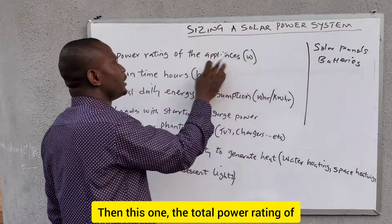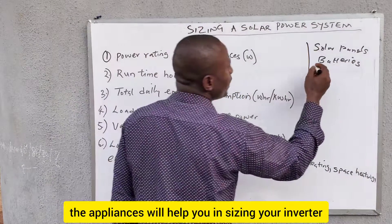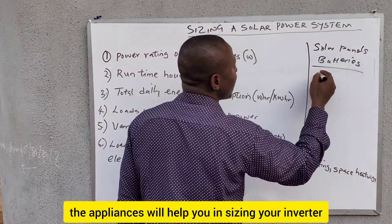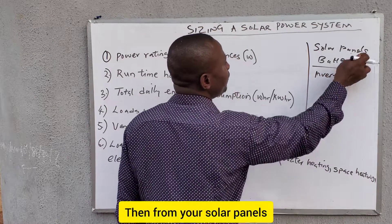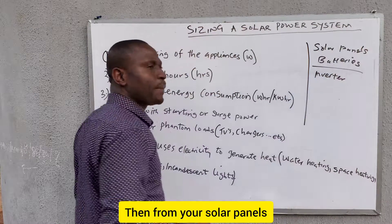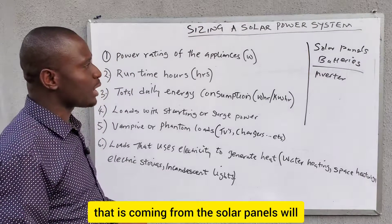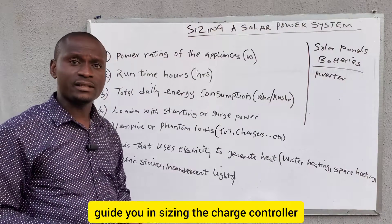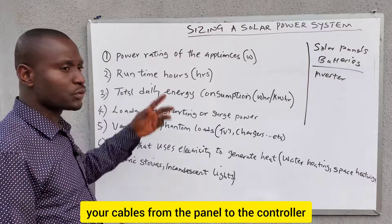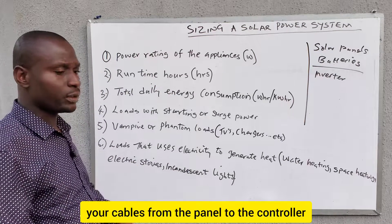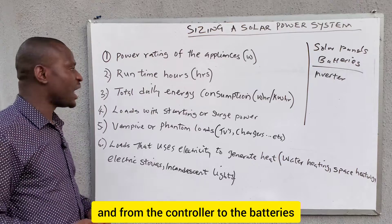The total power rating of the appliances will help you in sizing your inverter. Then, the current and voltage coming from the solar panels will guide you in sizing the charge controller, your cables from the panel to the controller, and from the controller to the batteries.